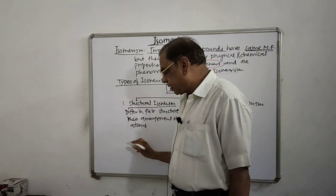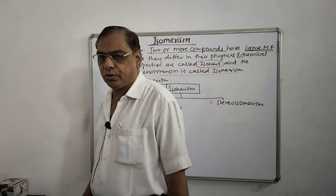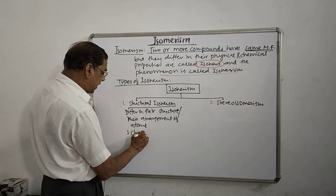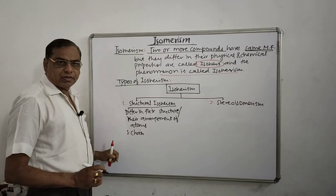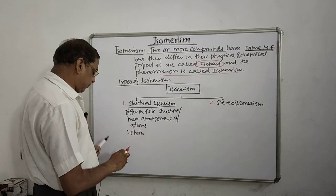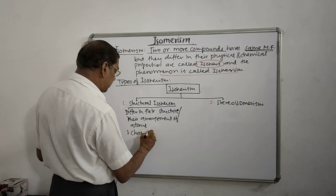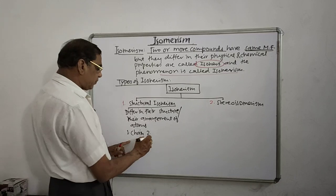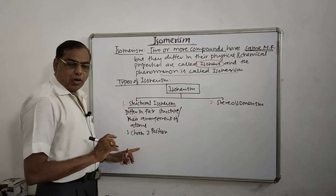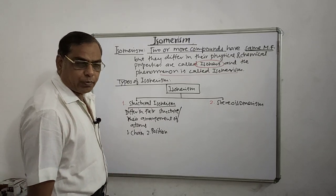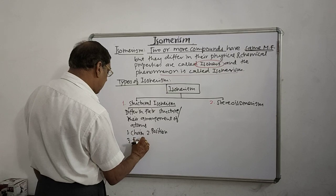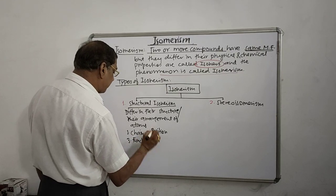Structural isomerism is again classified into a number of types. One is called chain isomerism — they have the same molecular formula but differ in their chain. The second one is called position isomerism — they have the same molecular formula but differ in the position of a functional group.